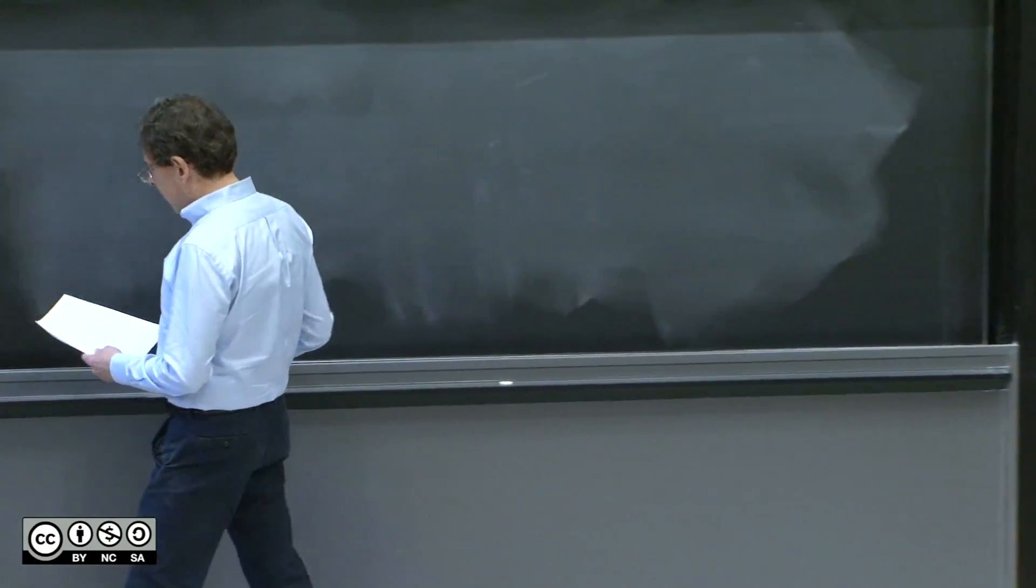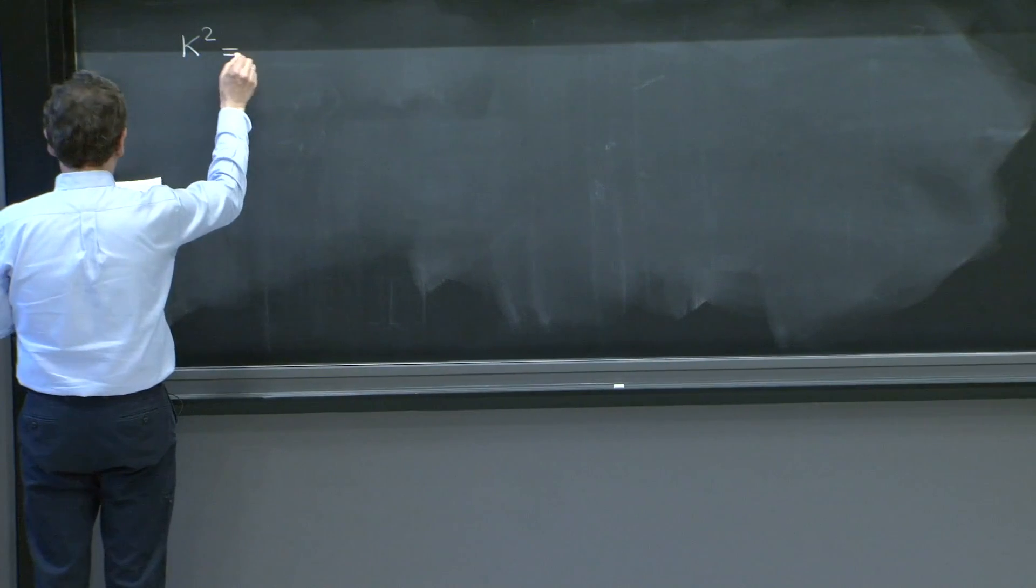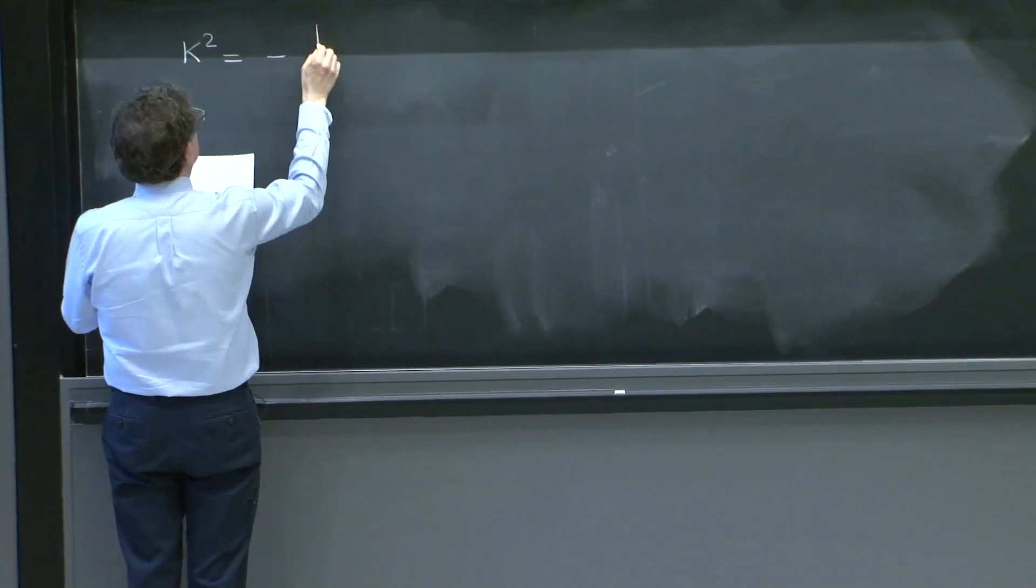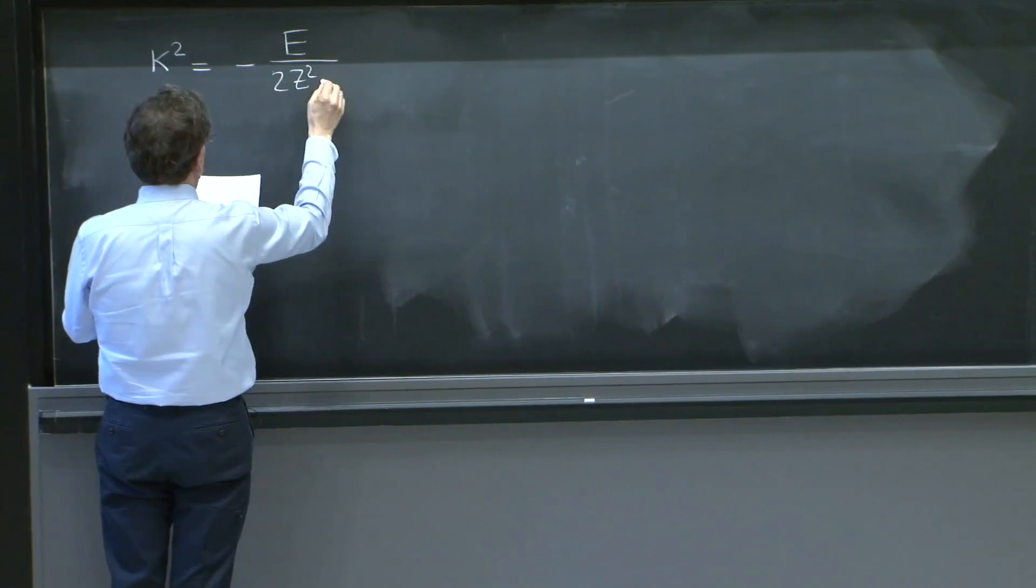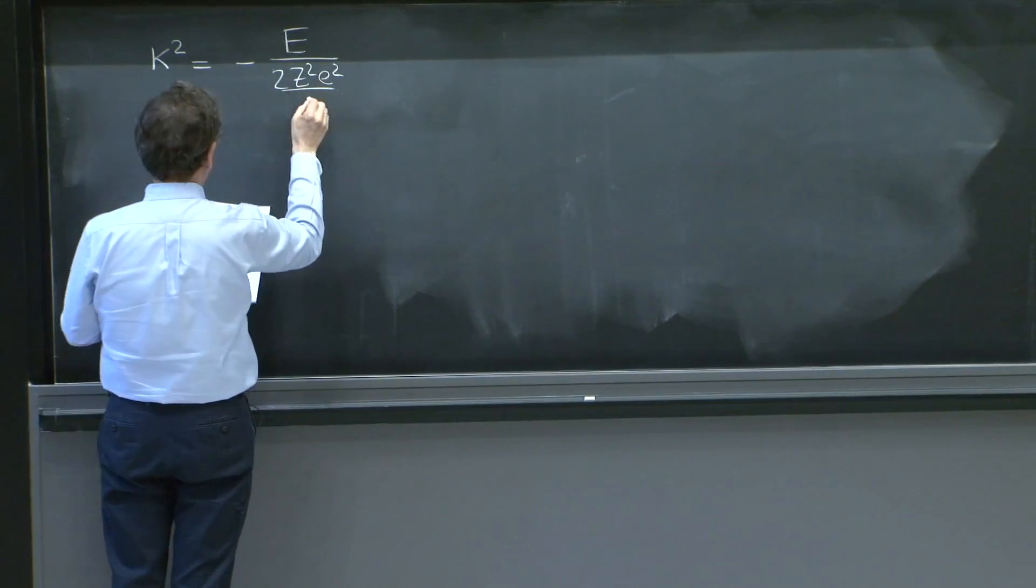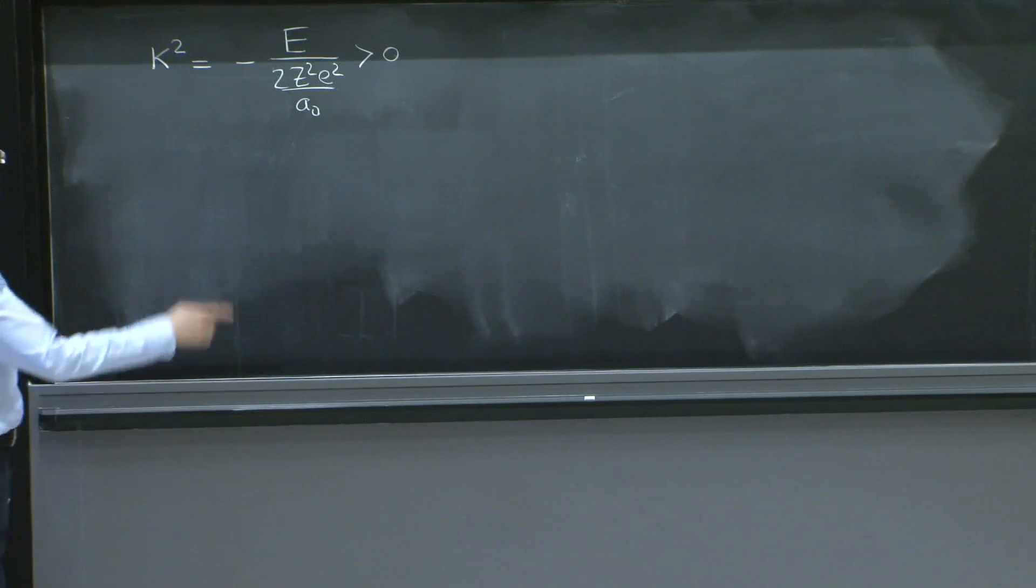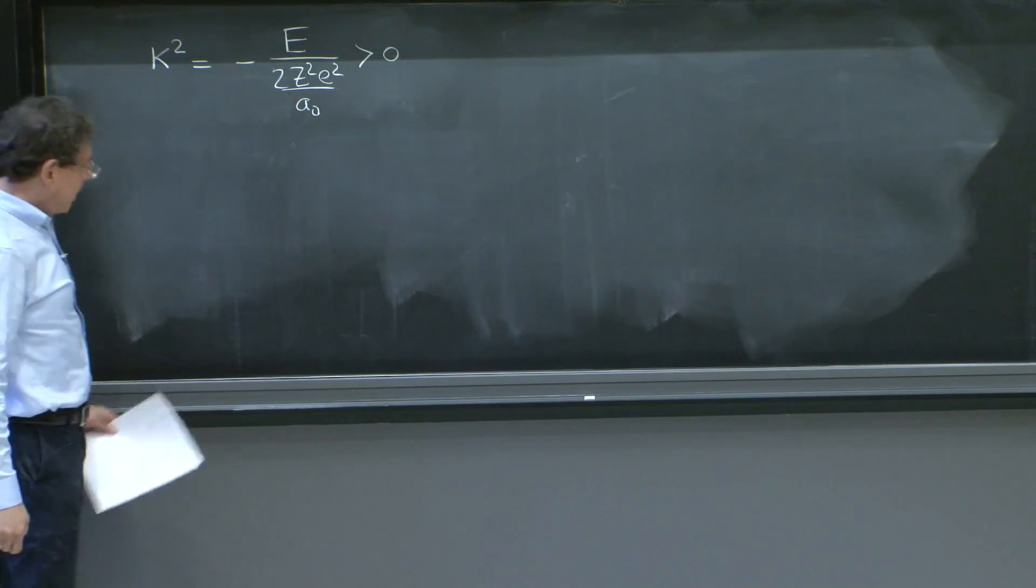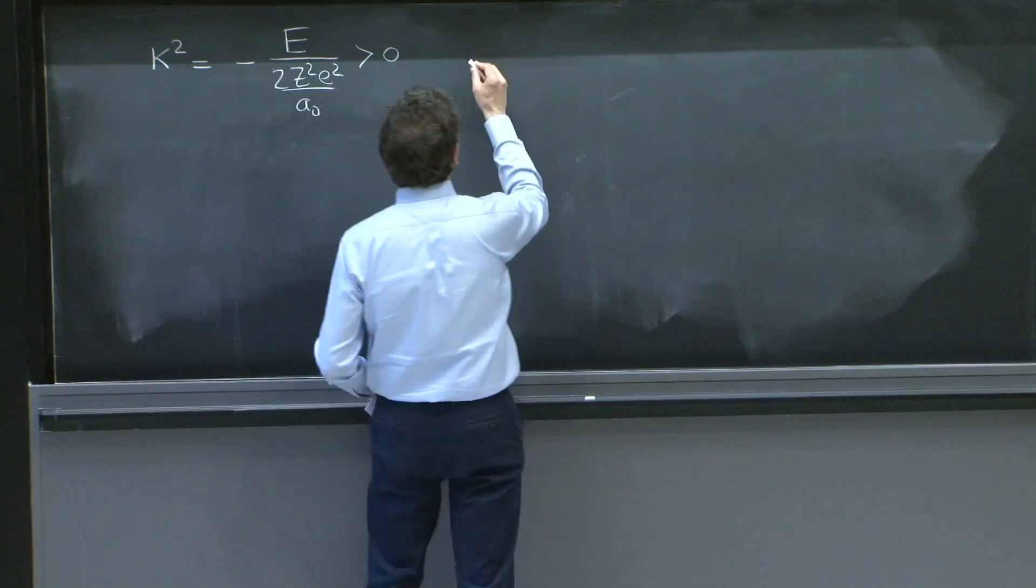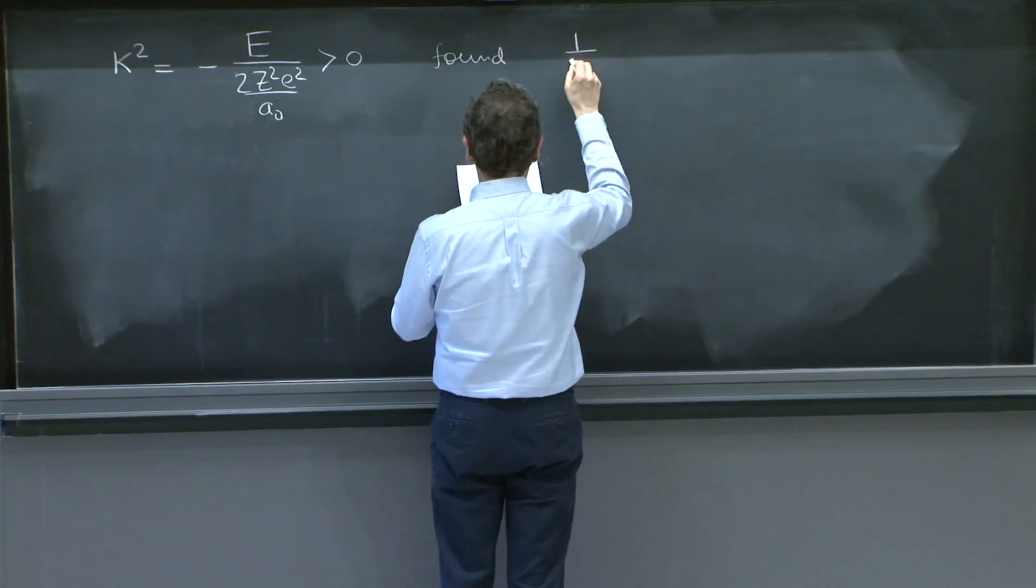What did we have last time? We had a constant, kappa, that reflected the energy. It was a unit-free version of the energy. It was greater than 0 because we were looking at bound states, so the energies were negative. And we found that this constant is quantized.